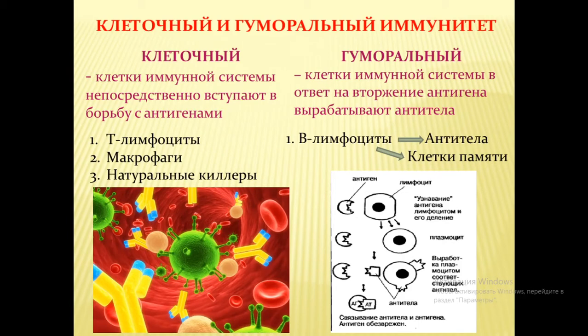Клетки, которые первыми встречают и начинают борьбу с антигенами, — это клетки врождённого иммунитета: фагоциты, различные макрофаги, натуральные киллеры и Т-лимфоциты. Есть ещё гуморальная система иммунитета: в крови образуются специальные антитела и клетки памяти к антигенам. Выработкой этих антител занимаются B-лимфоциты.